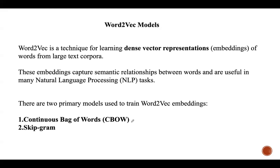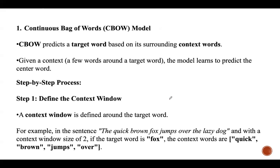There are two primary models used to train Word2Vec embeddings: first is the Continuous Bag of Words (CBOW) model and then the Skip-Gram model. The main goal of the CBOW model is to predict the target word given its surrounding context words — it takes the words around the target word and tries to predict the target word from this context.